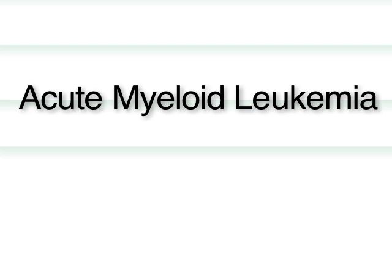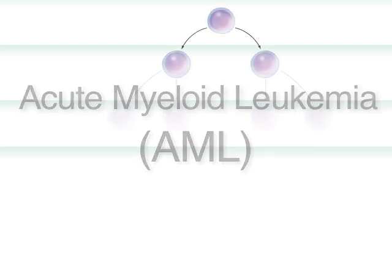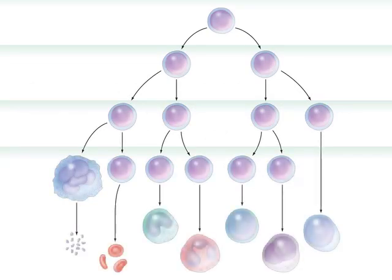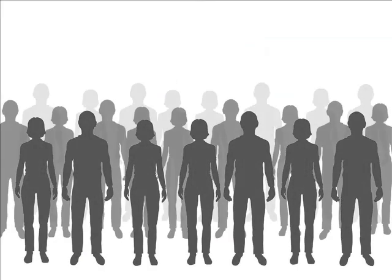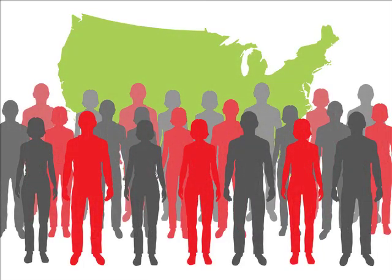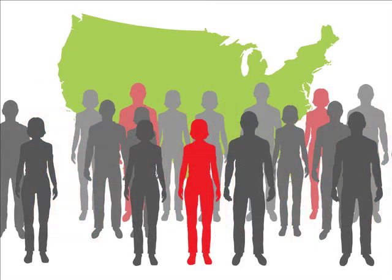Acute myeloid leukemia, or AML, is a cancer of the blood-forming cells, which originate in the bone marrow. AML is the most common kind of acute leukemia in adults, affecting about 13,000 people in the United States every year, with 9,000 deaths.